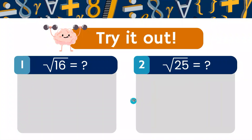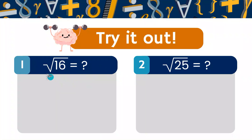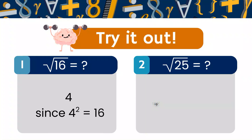Let's try this out. I have two problems for you to solve. Please pause the video and try to figure them out yourself. Okay, let's go through them together. First: what is the square root of 16? The answer, when squared, will be 16 — so what number squared equals 16? It is 4, since 4 squared is 16. 4 times 4 is 16.